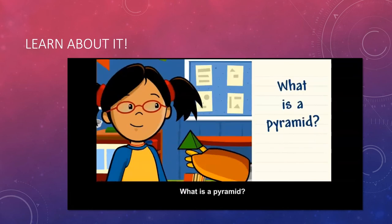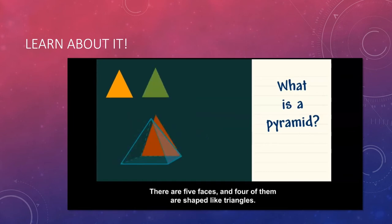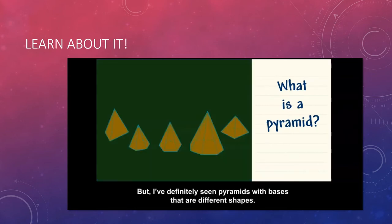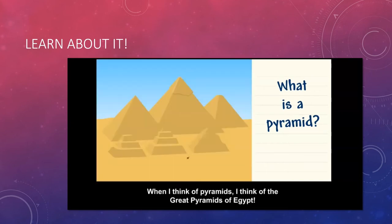What is a pyramid? This pyramid has eight edges and five vertices or corners. There are five faces and four of them are shaped like triangles. The base is the face on the bottom. The base of this pyramid is square, but I've definitely seen pyramids with bases that are different shapes. I guess the sides of any pyramid are triangles and they all meet at one vertex. When I think of pyramids, I think of the great pyramids of Egypt.